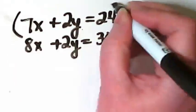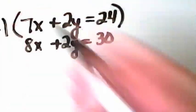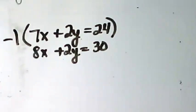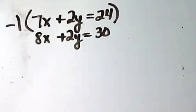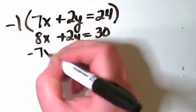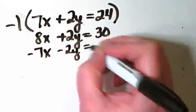So I'm going to multiply this by negative 1. That means that every term in here is going to have its sign changed, and I'm going to rewrite it down below, keeping them lined up.